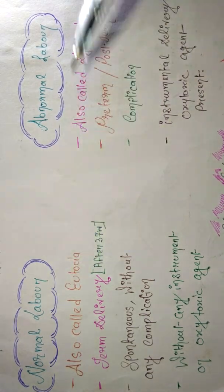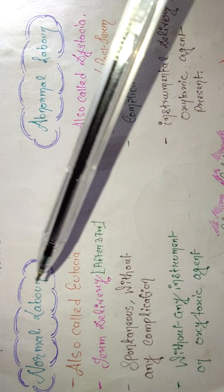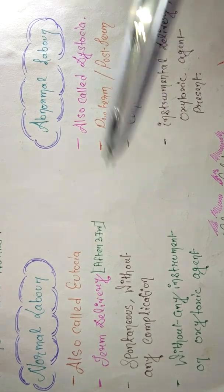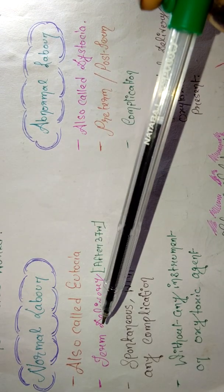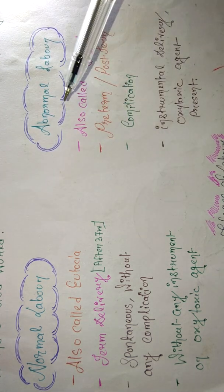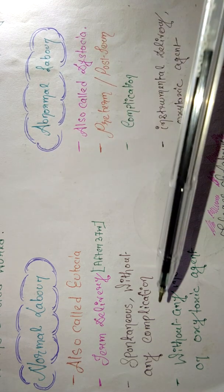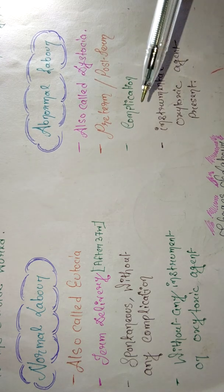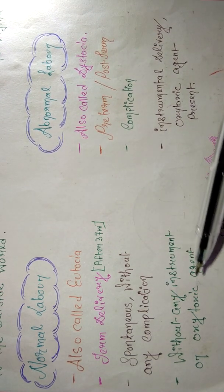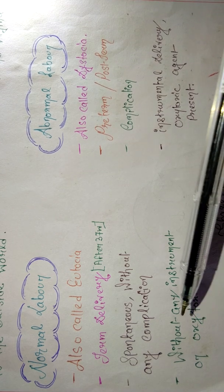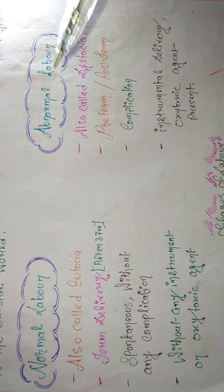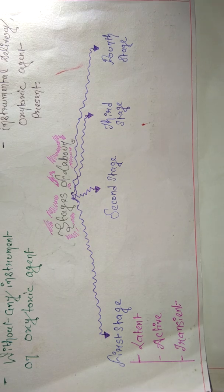Now let's understand normal labor and abnormal labor. Normal labor is also called eutopia, and abnormal labor is called dystocia. Normal labor means term delivery — after 37 weeks. Spontaneous delivery without any complication is normal labor. Without any instrument or oxytocic agent such as oxytocin is also normal labor. Any complication or instrumental delivery is considered abnormal labor.